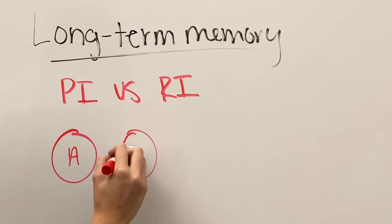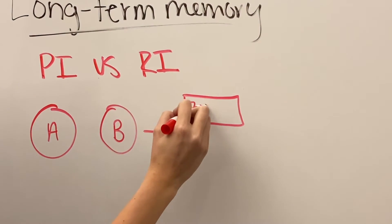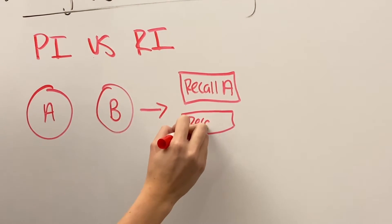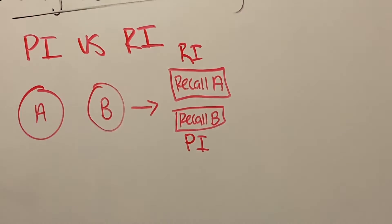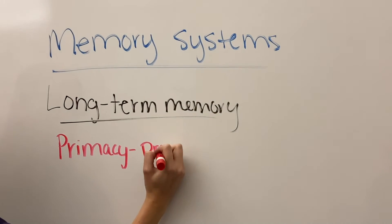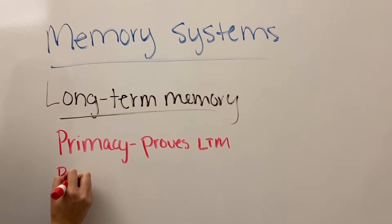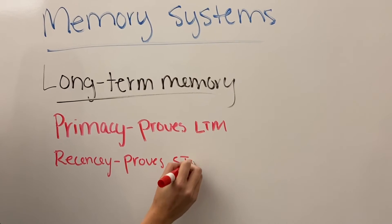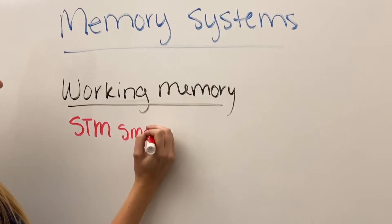Information A is presented and then information B is presented. When you are able to recall A information, it is RI, but when you are able to recall B information, it's PI. The primacy effect proves long-term memory because you are able to rehearse items long enough that they enter into long-term memory, while recency effects prove short-term memory because the most recent things memorized are remembered best.